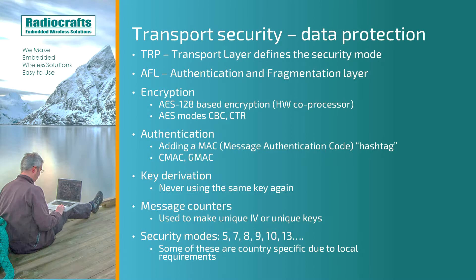Very often a hardware coprocessor is used to do the encryption. The AES modes that may be used are CBC, or CTR, the counter mode. Authentication is done by adding a MAC, a Message Authentication Code, also called a Hashtag. The typical algorithms for that are CMAC or GMAC.